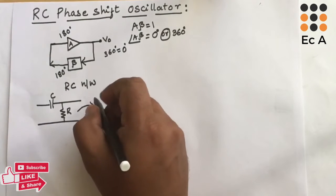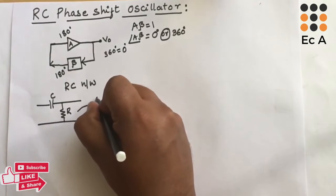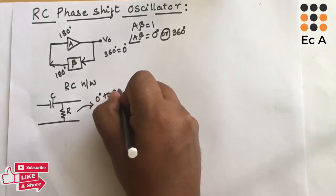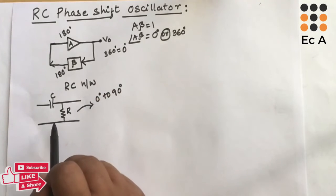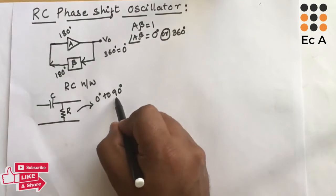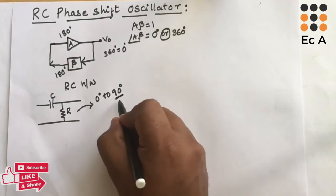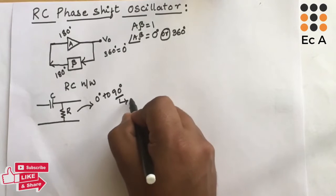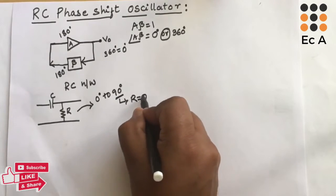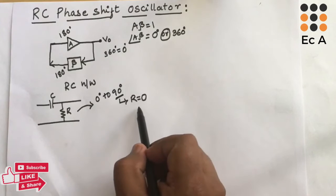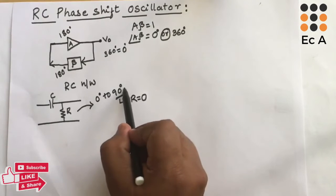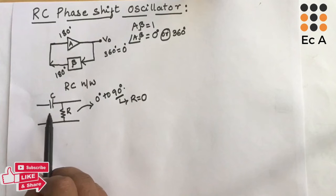If we consider a capacitor and resistor network, this network will provide a phase shift in the range of 0 to 90 degrees. So the maximum phase shift provided by a single RC network is 90 degrees, and this 90 degree phase shift is obtained when the resistor value becomes 0.